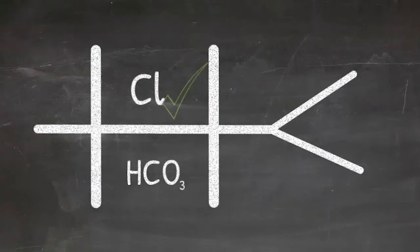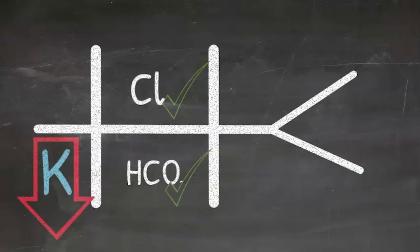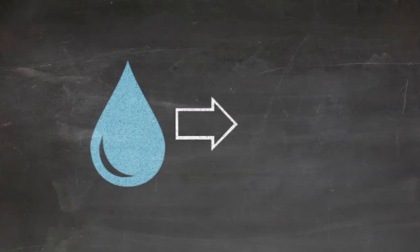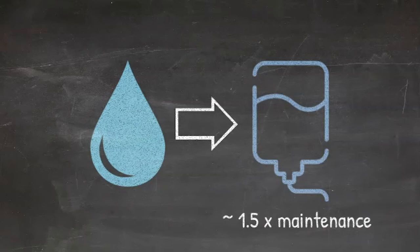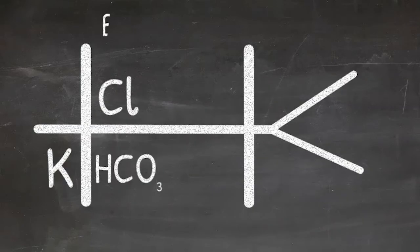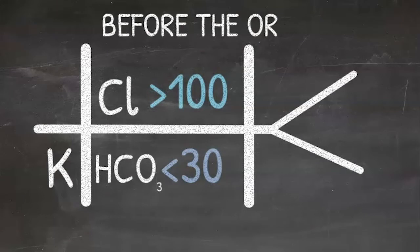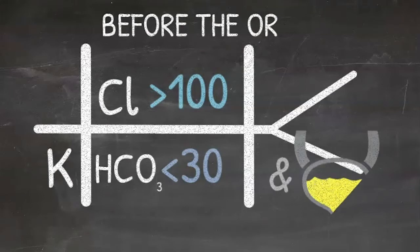If chloride and bicarb are normal, but potassium is low, give one bolus. The boluses can be followed by one to one and a half times maintenance fluids with dextrose. Prior to going to the operating room, electrolytes must be corrected. Serum chloride corrected to greater than 100, and most importantly, bicarb to less than 30, and ensure adequate urine output.